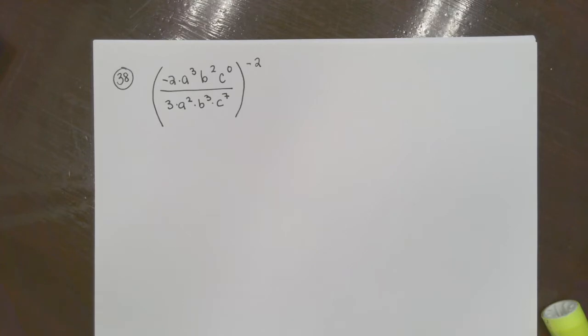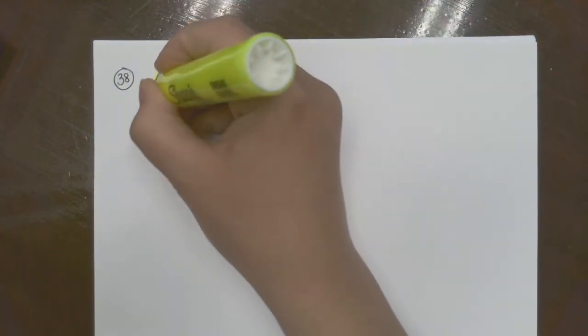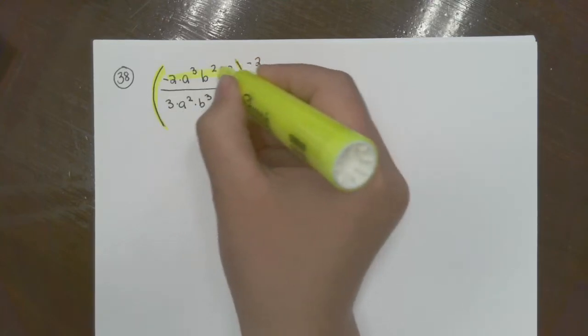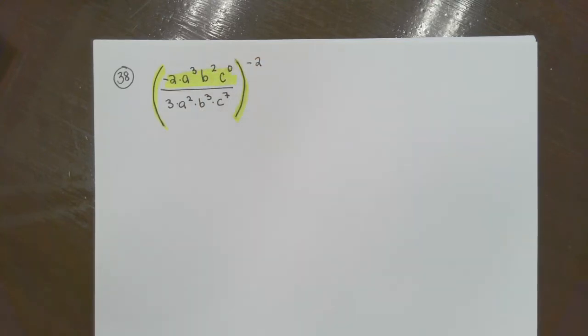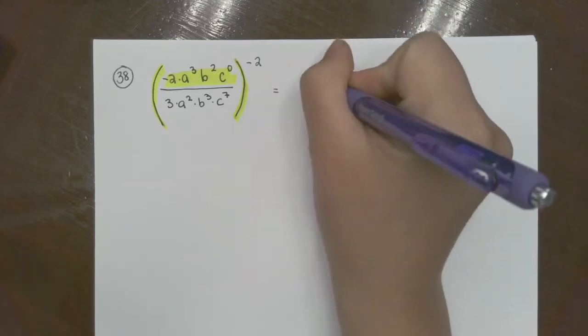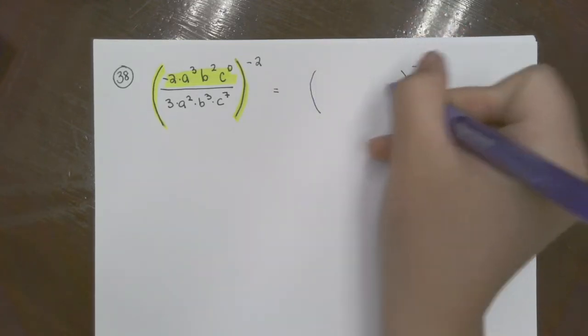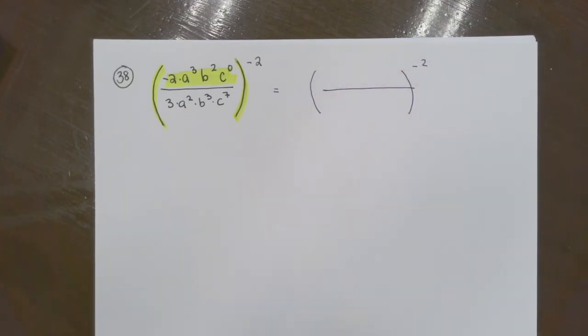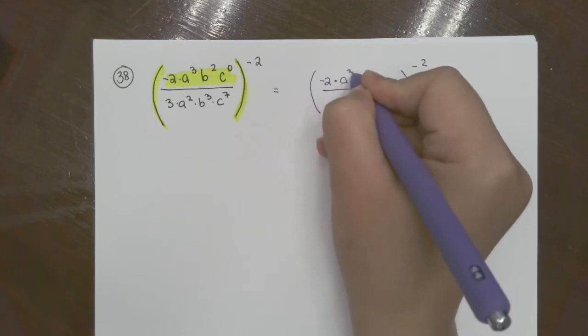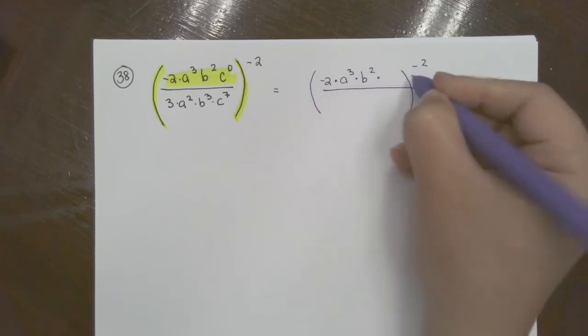I personally like to simplify inside before doing anything on the outside because maybe sometimes things can cancel out. For example, I'm going to choose to do inside, so I'm going to highlight these parentheses just to show you that I'm doing inside.